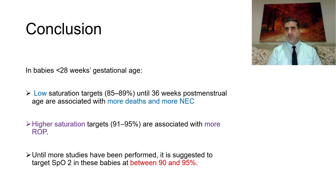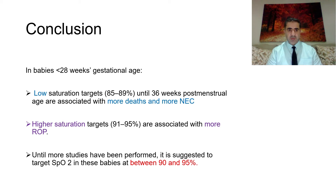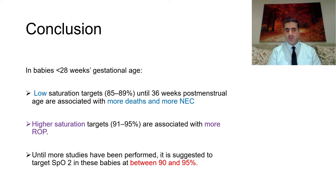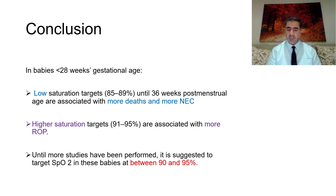What concerns us in this lecture is that in babies less than 28 weeks gestational age, low saturation (85–89%) was associated with higher mortality and more NEC, while higher saturation was associated with more ROP. Low saturation carries higher risks, whereas higher saturation benefits include less NEC — and ROP is a preventable, detectable disease.